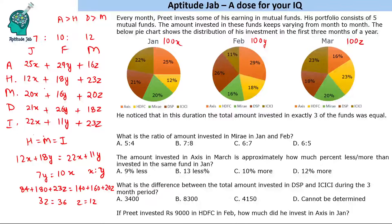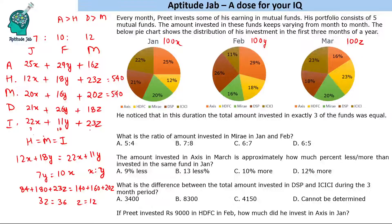Let us verify these values. H = 84 + 180 + 23×12 = 84 + 180 + 276 = 540. M = 140 + 160 + 20×12 = 140 + 160 + 240 = 540. And ICICI with ratio 7:10:12 also gives 22×7 + 11×10 + 23×12 = 154 + 110 + 276 = 540. All three give the same total of 540, confirming that x : y : z = 7 : 10 : 12 is correct.